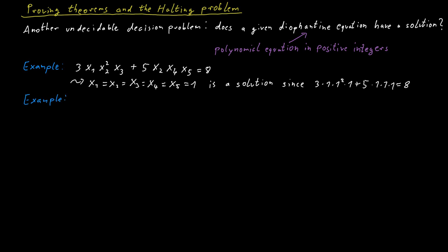How about this example: x1³ + x2³ - x3³ = 0. Can this be satisfied by positive integers x1, x2, and x3? This is much harder to see. It turns out that this cannot be satisfied, so there is no solution in positive integers for this equation.